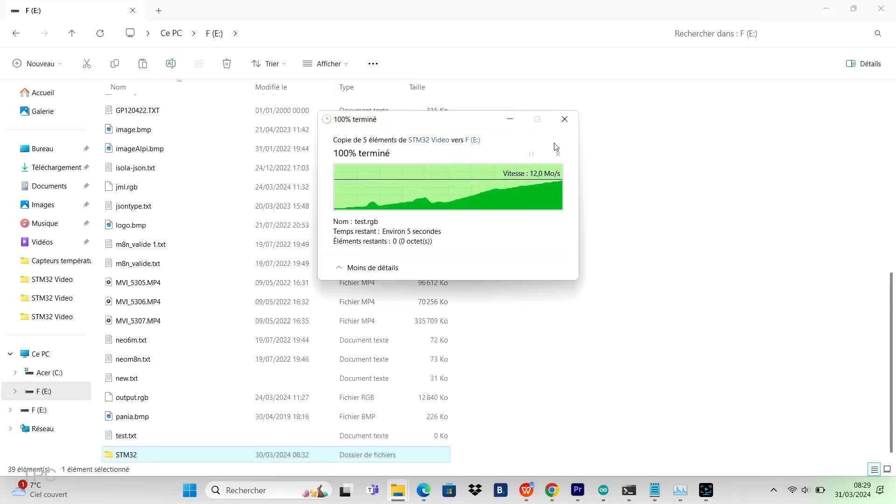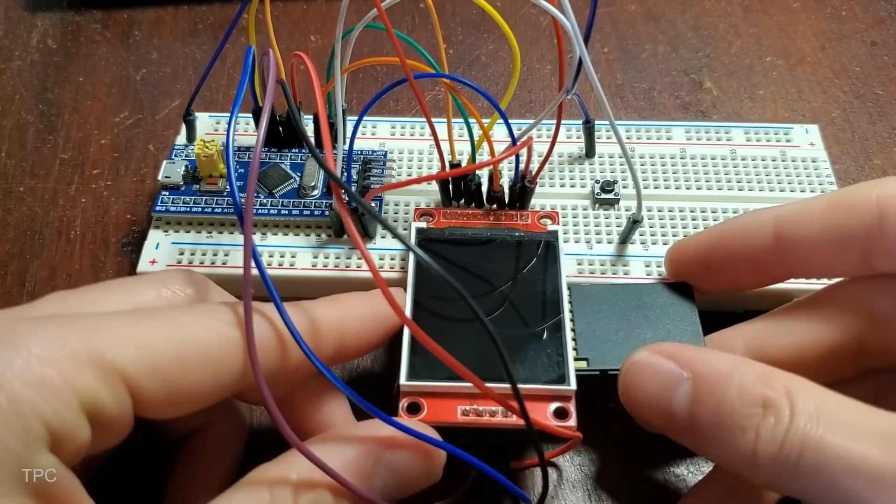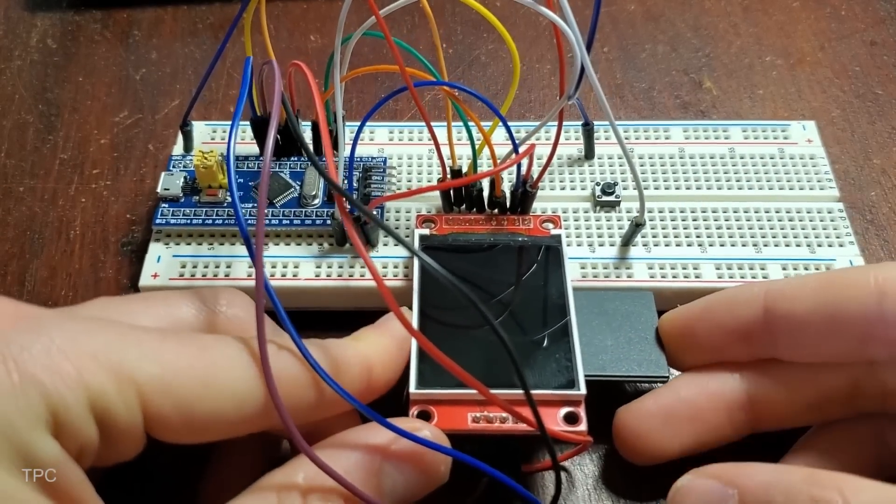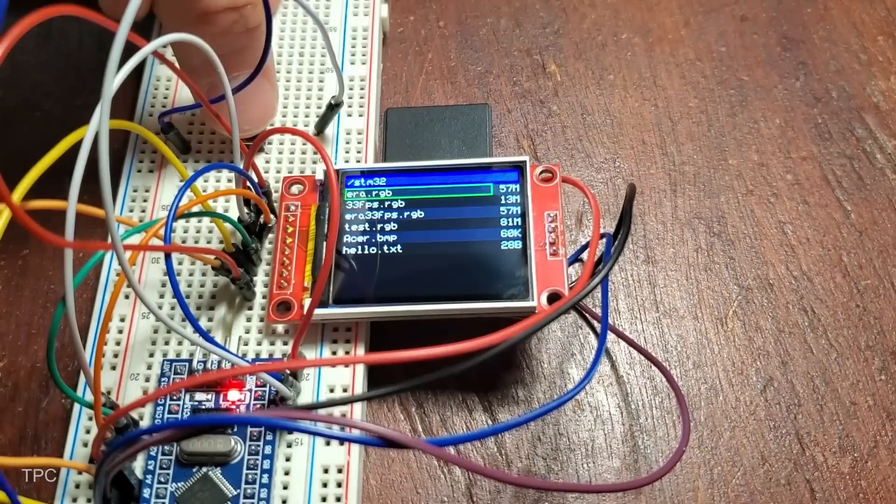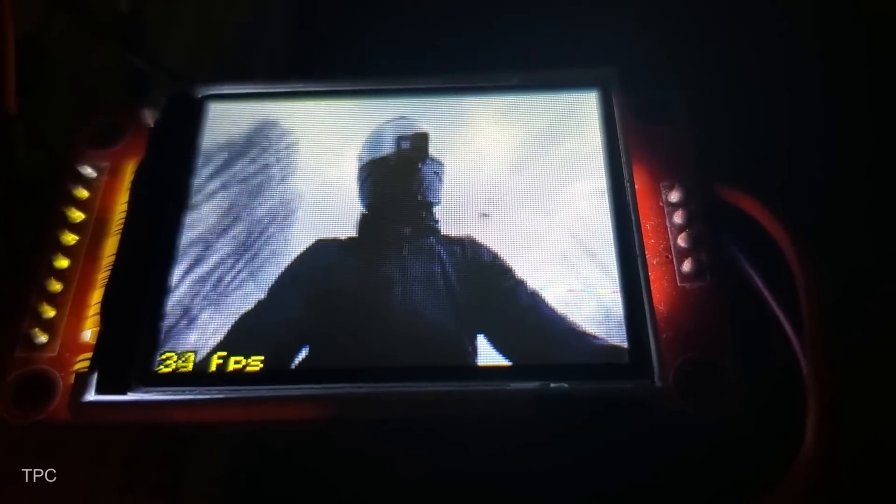Once the media files are ready, they are stored on an SD card, which the microcontroller reads and streams directly to the TFT screen. The display is capable of rendering the frames quickly, resulting in smooth video playback for such a small display.